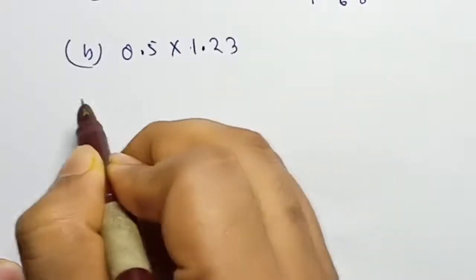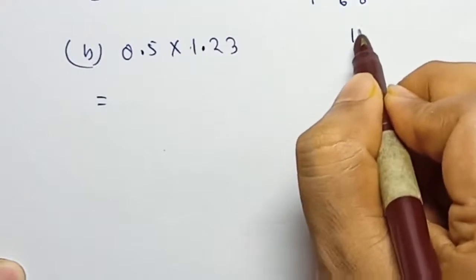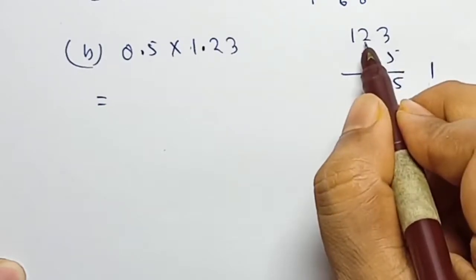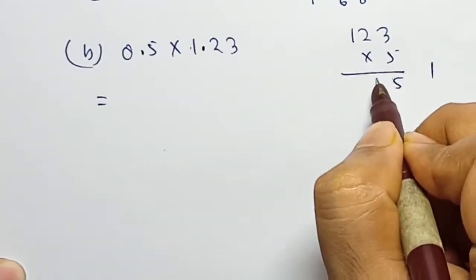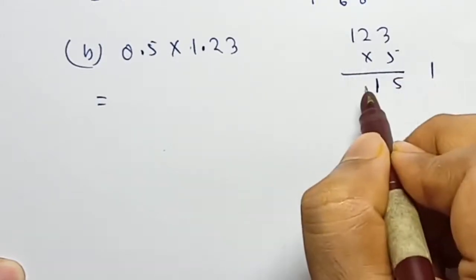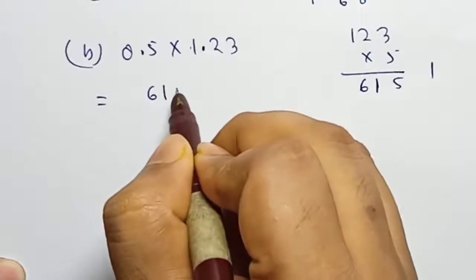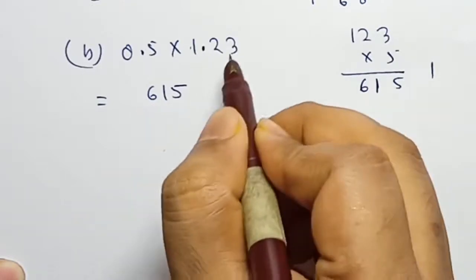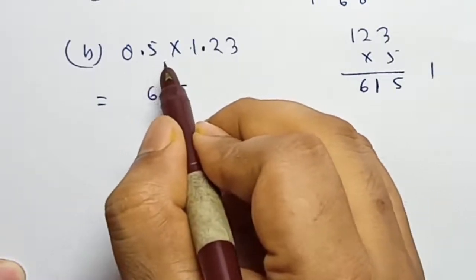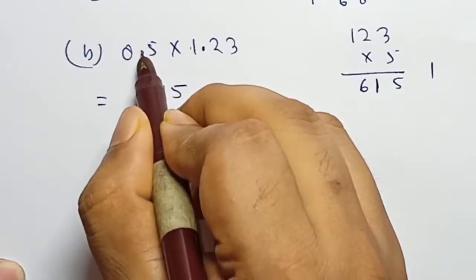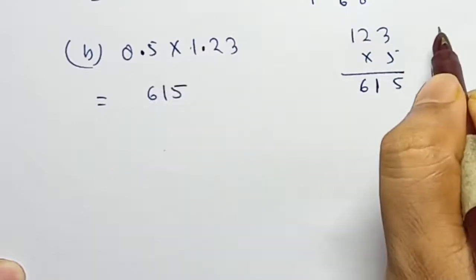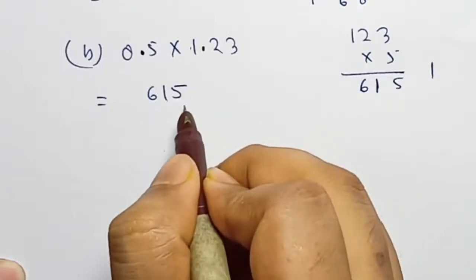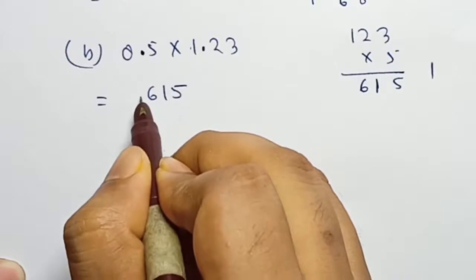0.5 into 1.23: multiply the numbers — 123 into 5. 5 threes are 15, carry 1; 5 into 2 is 10, 10 plus 1 is 11, carry 1; 5 into 1 is 1, plus carry 1 is 6. So the product is 615. Now count decimal places: 0.5 has 1 digit, 1.23 has 2 digits, so 1 plus 2 equals 3. Place decimal point 3 from the right.